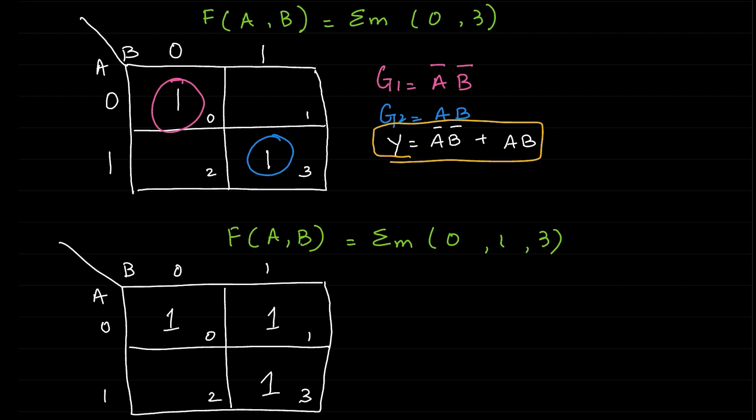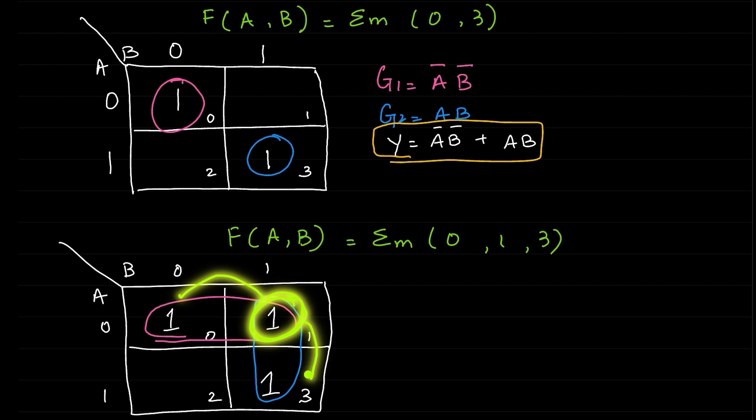Now next step is to group the numbers, and we can group these two numbers, and also we can group these two numbers as well. Here you can notice that this particular one is used in the grouping of this one and this one as well, and so it can be done. It is not a problem in K-map.